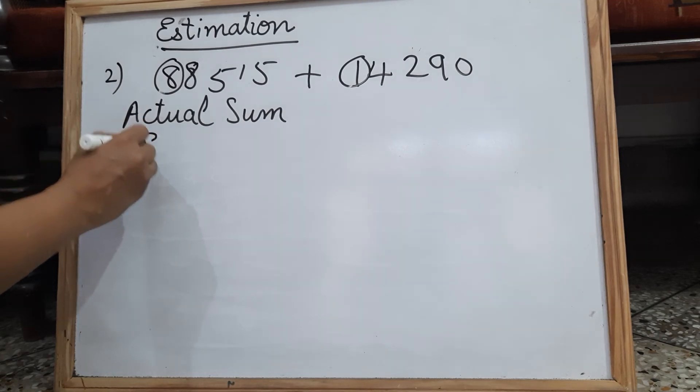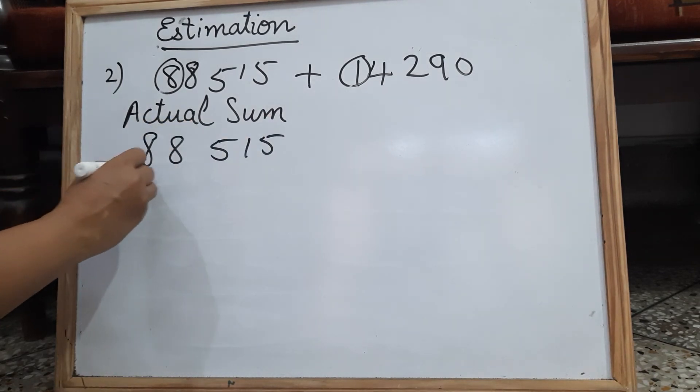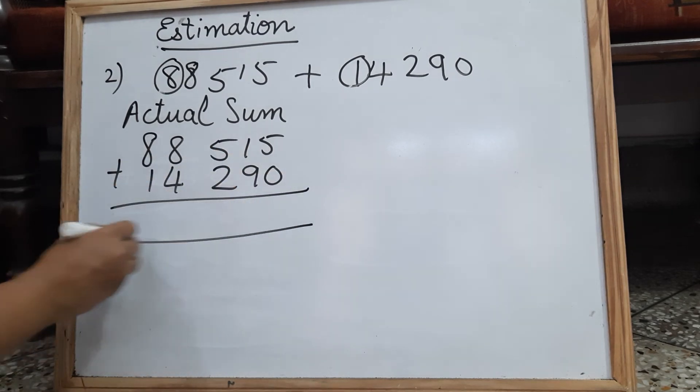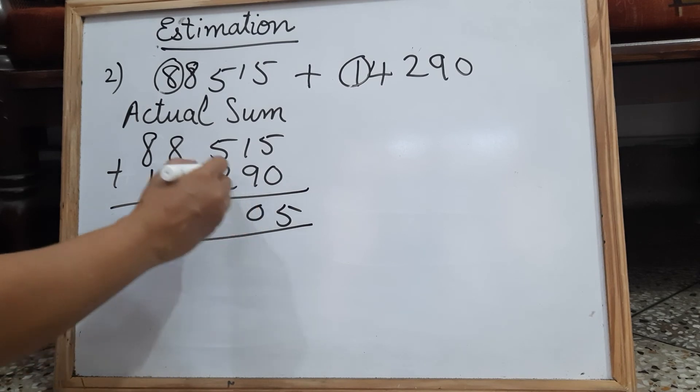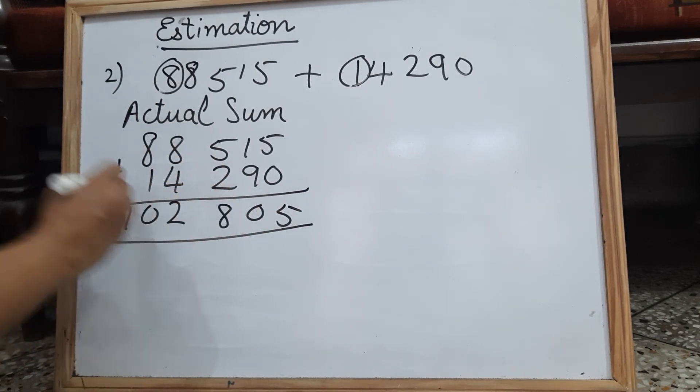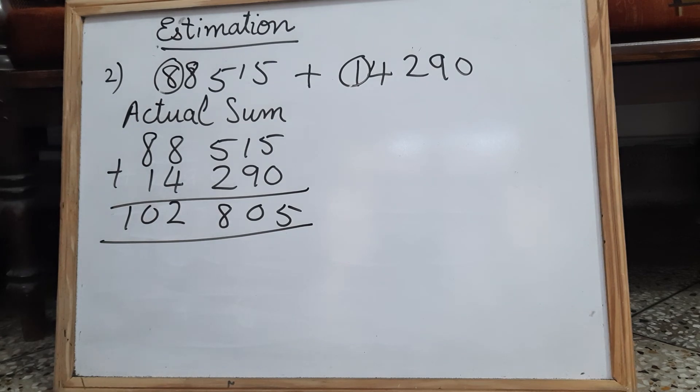Let us find the actual sum. 88,515 is added to 14,290. So add and get the sum. So we got 102,805.